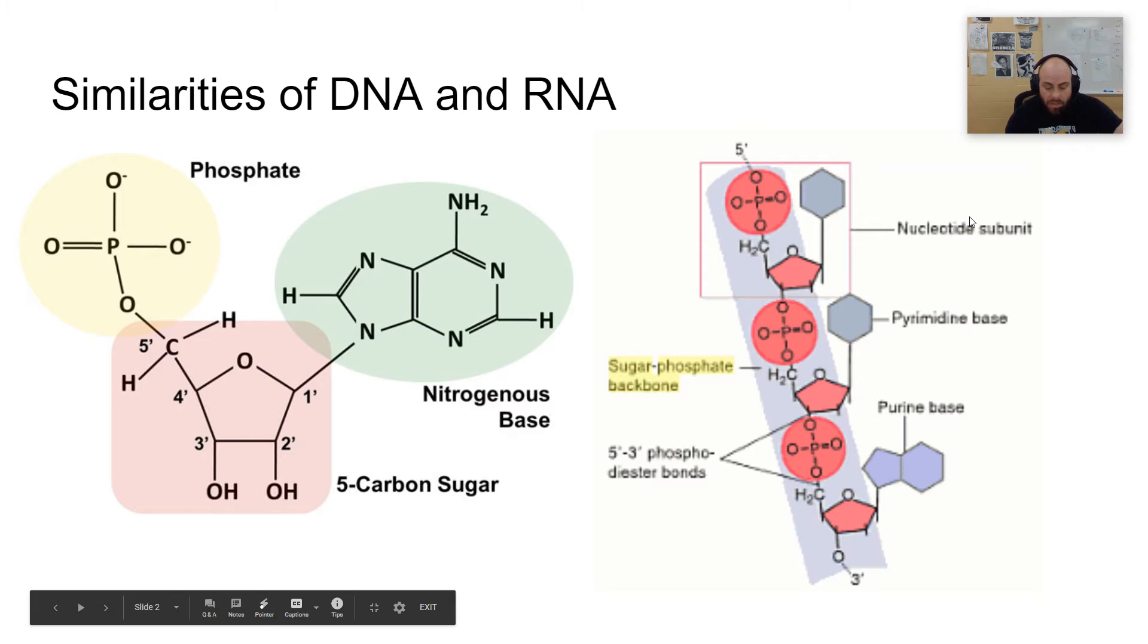And then each one of these linear strands has directionality to it. Remember, this carbon here is the 5' carbon to this 3' carbon here. And so DNA runs in this 5' to 3' direction. And so this type of arrangement is going to be found whether we're talking about DNA or RNA. It's going to look very similar to this.